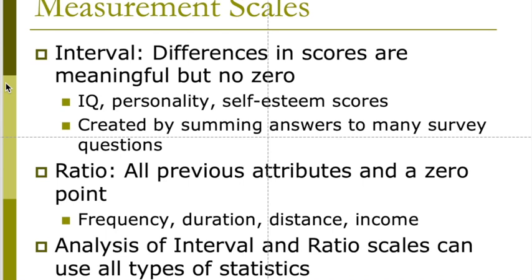You might also think of temperature scales — there is only one temperature scale that actually has a true zero. All the other ones have a negative score, so anything where a score can go negative would be an interval scale. With an interval scale, you can essentially do all kinds of statistical tests: means, medians, modes, standard deviations, interquartile ranges, and almost any kind of statistic. Interval scales and ratio scales can have a normal distribution, so you can use t-tests and ANOVA.